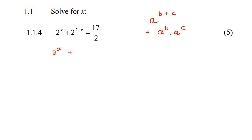That's just writing it backwards. So this can be written as 2 to the 2 times 2 to the negative x equals 17 over 2.